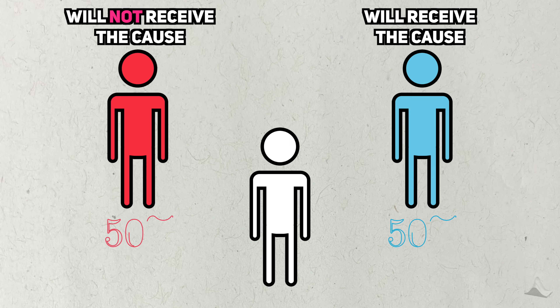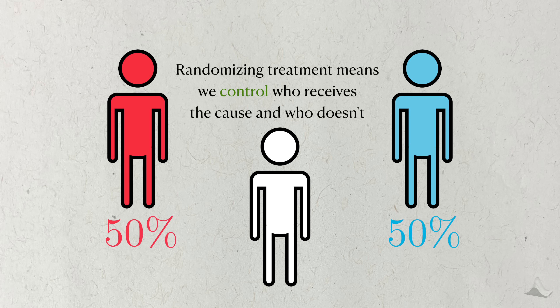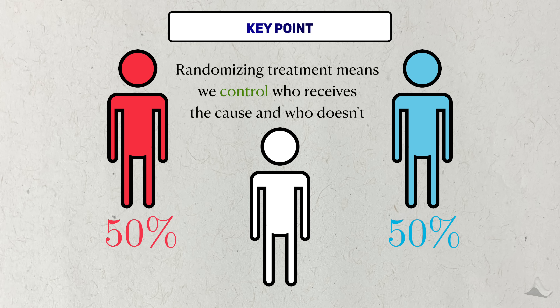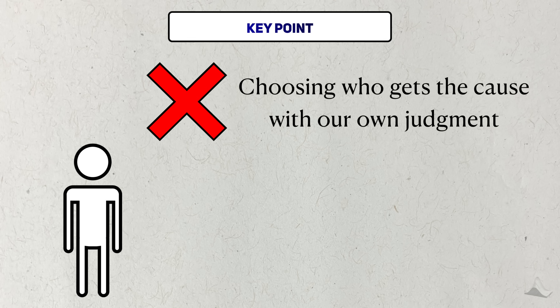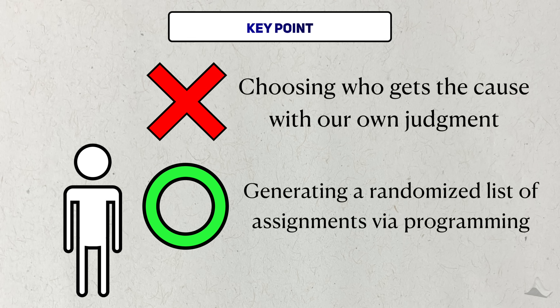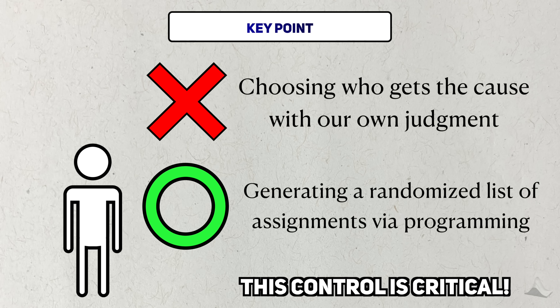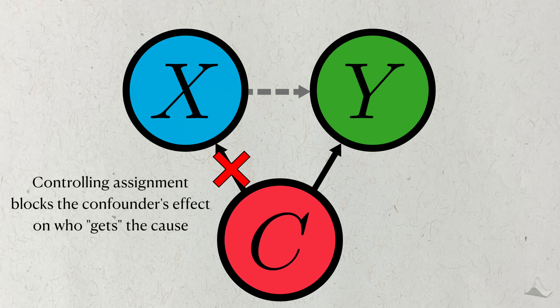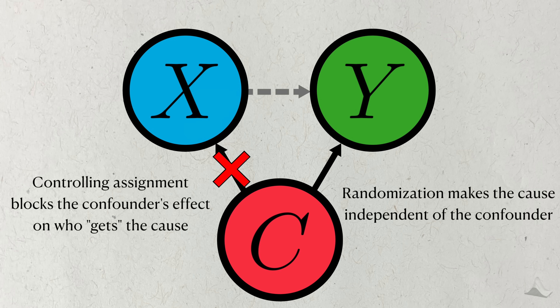When we randomize some people to experience the cause and others not to, we're actually implicitly controlling who gets it and who doesn't. We're not specifically choosing who gets what treatment, but we're the ones who make the randomization list. This control blocks any influence that the confounder might have on who experiences the potential cause — we're effectively making the cause independent of the confounder.